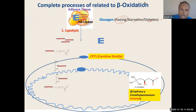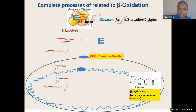So glucagon will actually activate this enzyme. How does glucagon activate? The favorite way of activating is by addition of a phosphate group through cAMP — cAMP-dependent kinase. So this phosphate is added and then hormone-sensitive lipase becomes active.